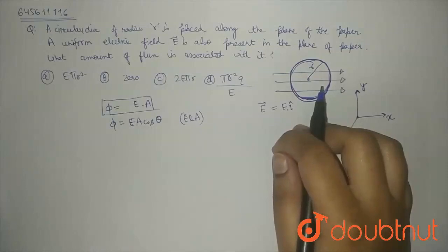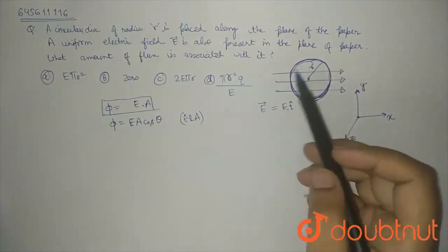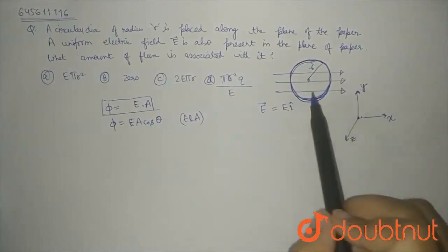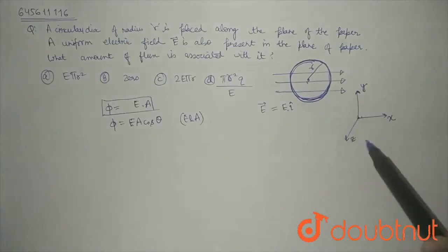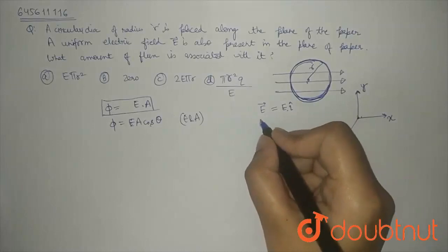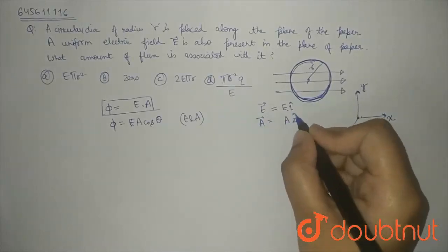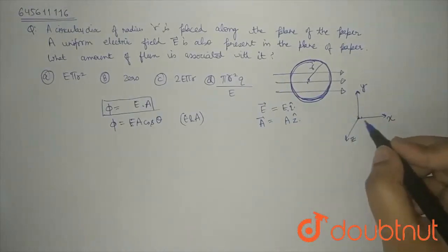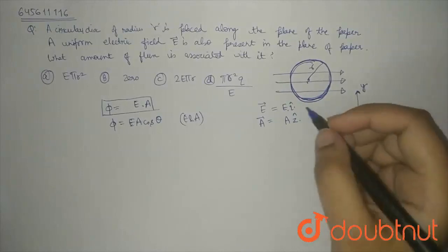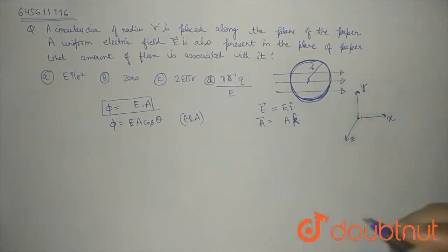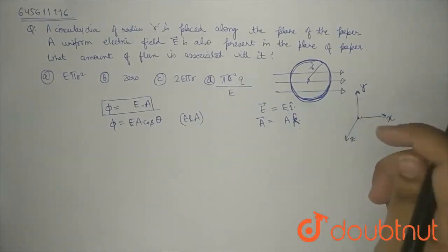So area vector - because the circle is in xy plane, where will the area vector be? z axis means out of the paper, so area vector we will write A z cap. And we have to write k cap because z axis unit vector is k cap.